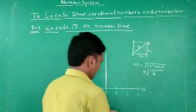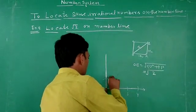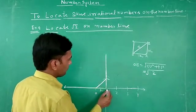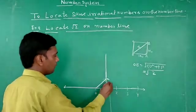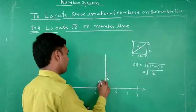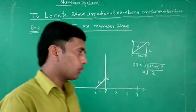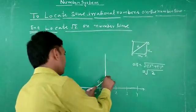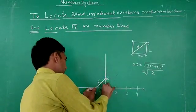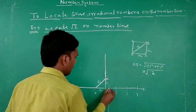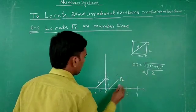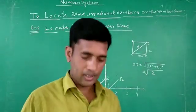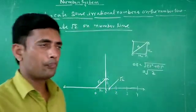Here one centimeter and one centimeter are joined. Suppose here one centimeter and one centimeter — root 2 centimeters. Locate root 2 on the number line. Root 2 on the number line: here, this point indicates root 2. In class 8 this is approximately 1.4 — here, here on the number line.